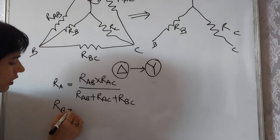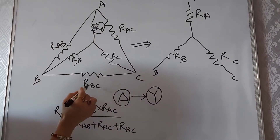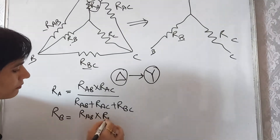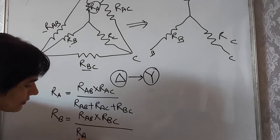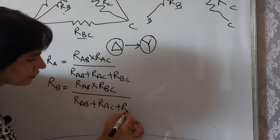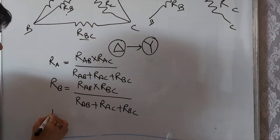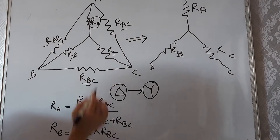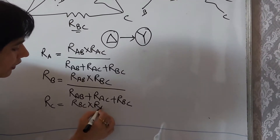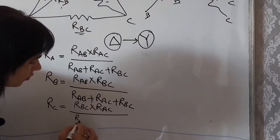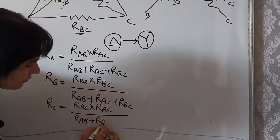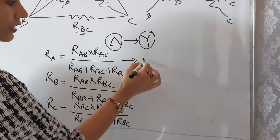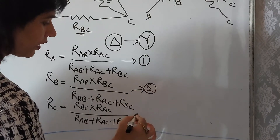Similarly, for R_B, the adjacent resistances are R_BC and R_AB. So R_B equals R_AB × R_BC divided by the total resistance R_AB + R_AC + R_BC. For R_C, the adjacent resistances are R_BC and R_AC, so R_C equals R_BC × R_AC divided by the total resistance. These are equations 1, 2, and 3 for delta-to-star conversion. One similarity: the denominator is the same in all three formulas — the summation of all resistances.